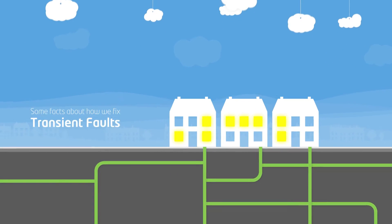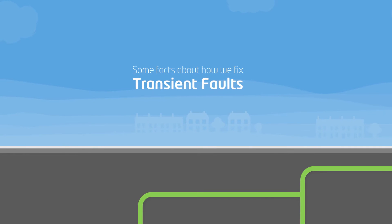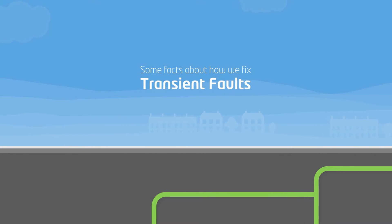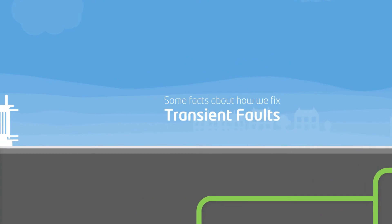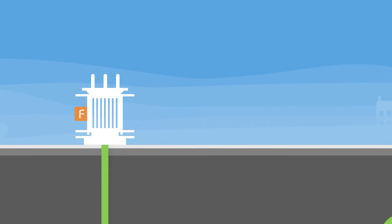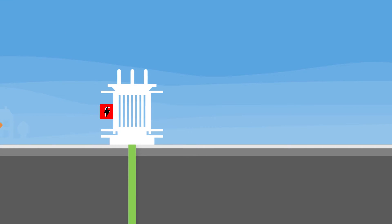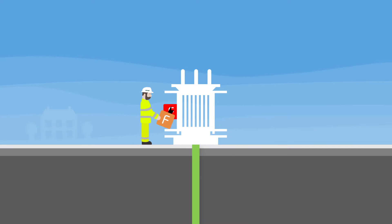Here are some facts about what's happening and how we fix these types of faults. When there's a fault on the network, it will blow a fuse in the local substation, which causes a power cut. When that happens, we go to the substation and replace the fuse to restore power to your property.